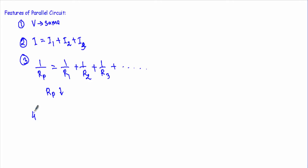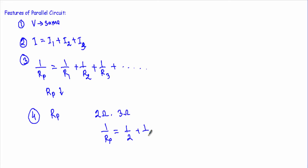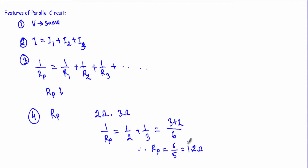Fourth: the total resistance Rp will always be less than the smallest resistance in the parallel branches. For example, if I connect 2-ohm and 3-ohm resistances in parallel, Rp = 1/(1/2 + 1/3) = 1/((3+2)/6) = 6/5 = 1.2 ohms. Our total resistance Rp is smaller than the smallest resistance in the circuit.